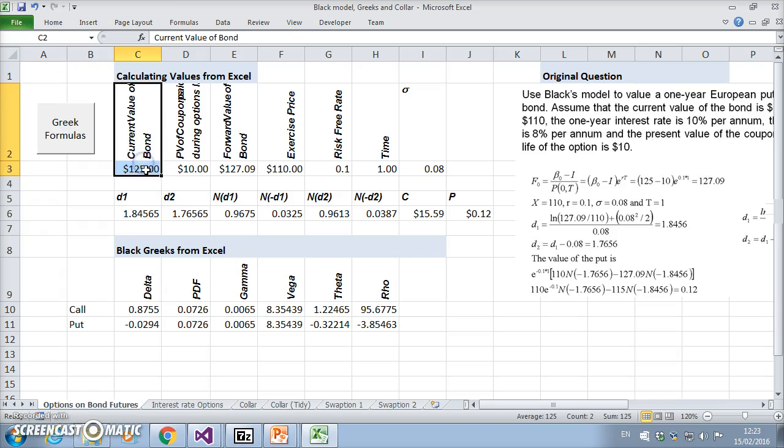Let's look at this in Excel. I've set out the original question: bond price 125, present value of coupons 10, futures price 127.09, exercise 110, risk rate 10%, one year, volatility 8%. The value of the call is 15, value of the put is 12, and then I've estimated the delta, gamma, vega, theta, and rho.